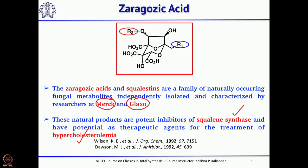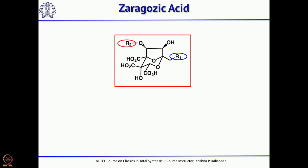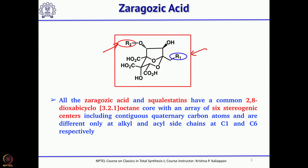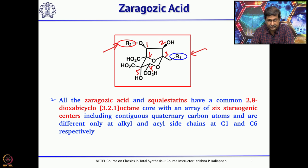There are many xeragosic acids, and the variation depends on the substituents — R2 attached to oxygen and the side chain R1. If you look at this natural product carefully, you can find 6 stereogenic centers, and at least 4 of those are quaternary centers.